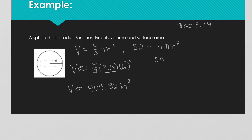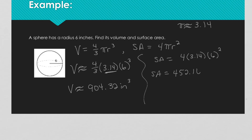Our surface area is 4 times pi times 6 squared. On my calculator — 4 times 6 squared — that is approximately 452.16. Since we approximated pi we should use the squiggly equals, and the units are inches squared for area.